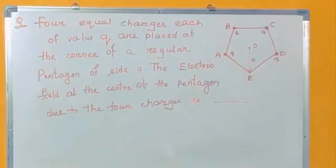Four equal charges, each of value Q, are placed at the corners of a regular pentagon of side A. The electric field at the center of the pentagon due to the four charges is asked.